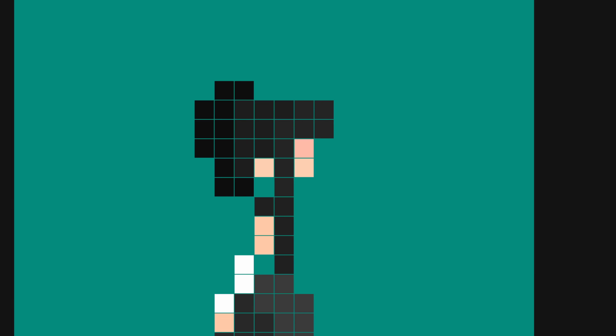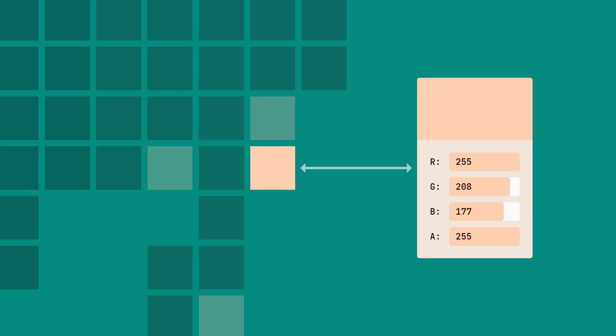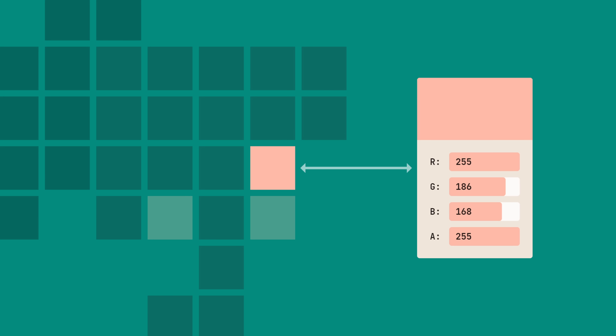Let's start by taking a closer look at this texture. Typically, each pixel in an image is represented by four values: red, green, blue, and alpha. There is nothing special about them — some 8-bit numbers ranging from 0 to 255 — but the way shaders interpret these values turns them into color. That being said, nothing stops us from writing a shader that will interpret these values differently.